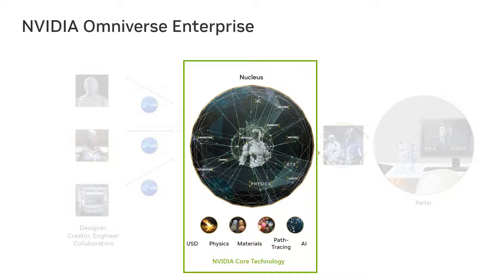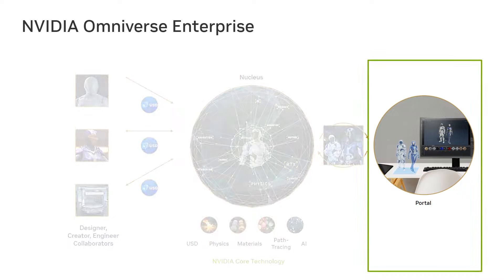Scenes built in Omniverse obey the laws of physics and are true to reality. On the right, viewers can portal in and out of Omniverse with workstations or laptops, and even teleport in with virtual reality or out with augmented reality. Anyone can view a scene on Omniverse by streaming RTX to their device. Let's examine how Omniverse is used in architecture, engineering, construction, and operations industries.